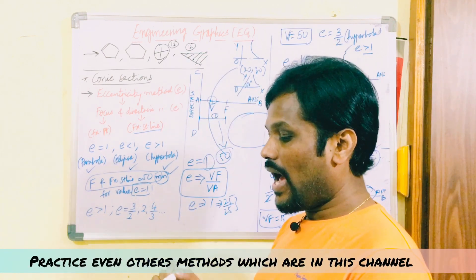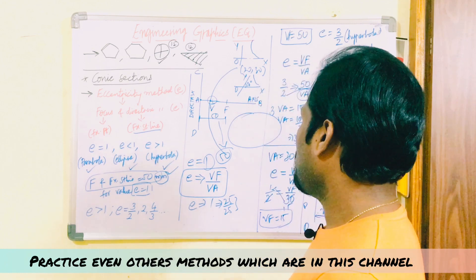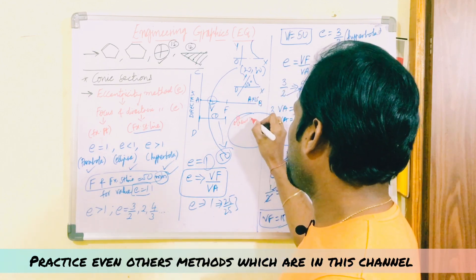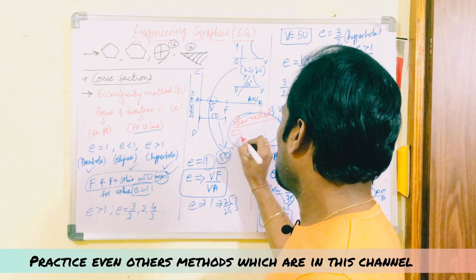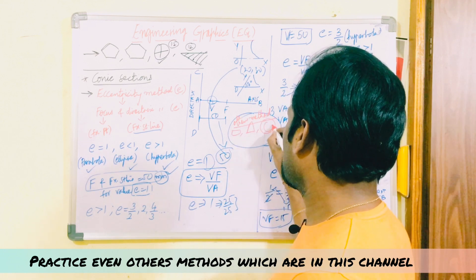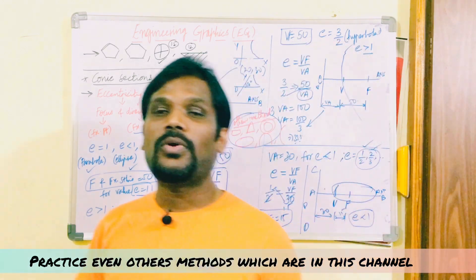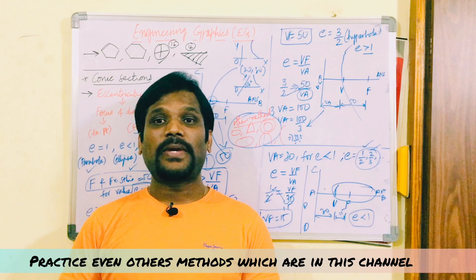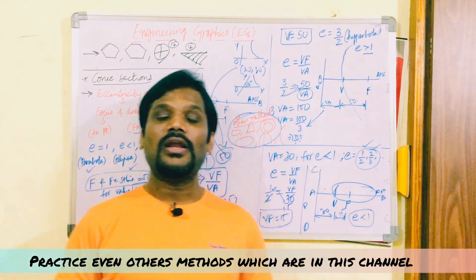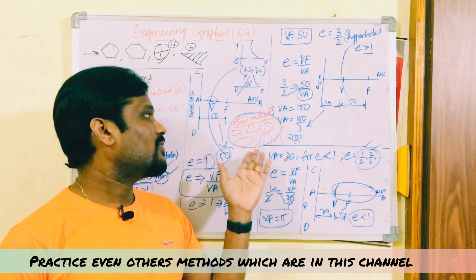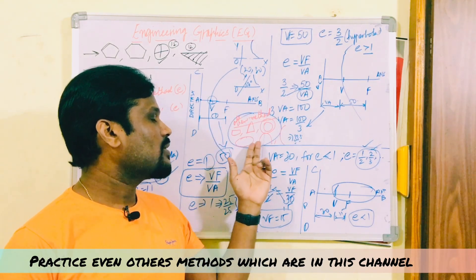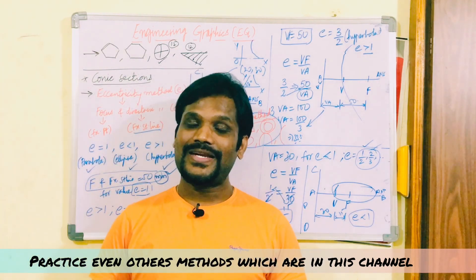Other than the eccentricity method, they also ask other methods in the examination: the rectangular method, oblong method, and concentric circle method to construct ellipse, parabola, and hyperbola. Videos for all these constructions are already uploaded in my channel. Do not expect only the eccentricity method — the rectangular hyperbola, oblique method, and other construction methods are equally important.